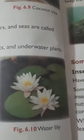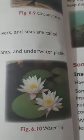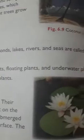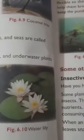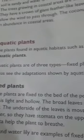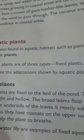Aquatic plants are of three types: fixed plants, floating plants, and underwater plants. First, we will look at fixed plants. These plants are fixed to the bed of the pond.